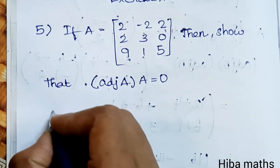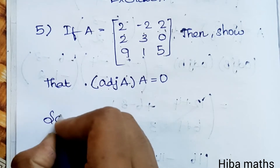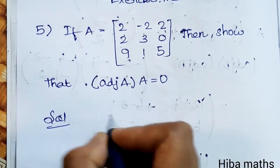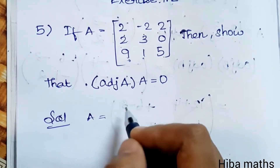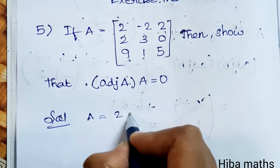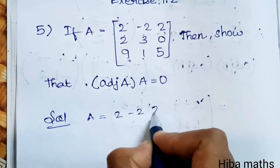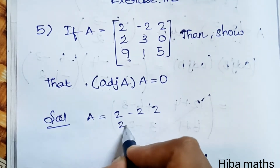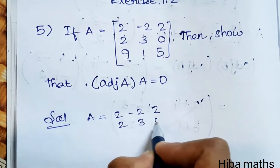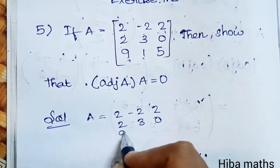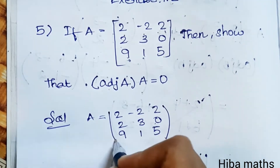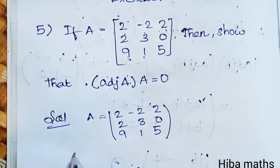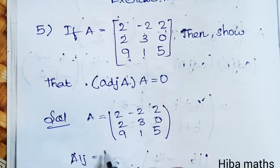Solution: A is equal to [[2, -2, 2], [2, 3, 0], [9, 1, 5]]. To find adjoint of A, we first need to find the cofactors.